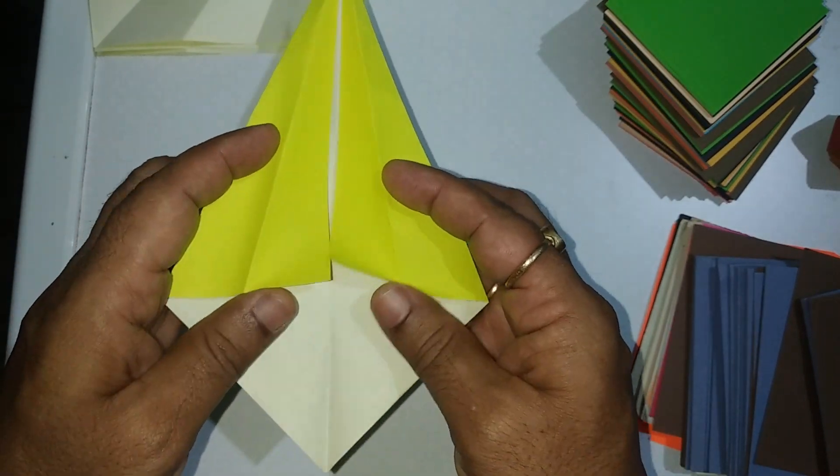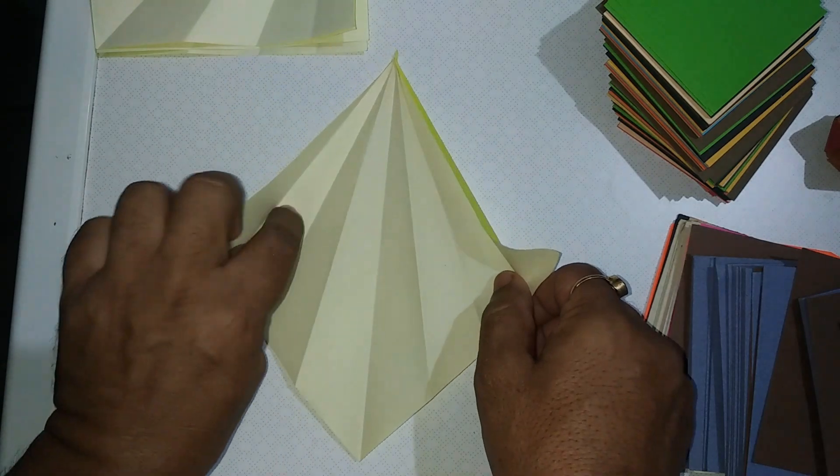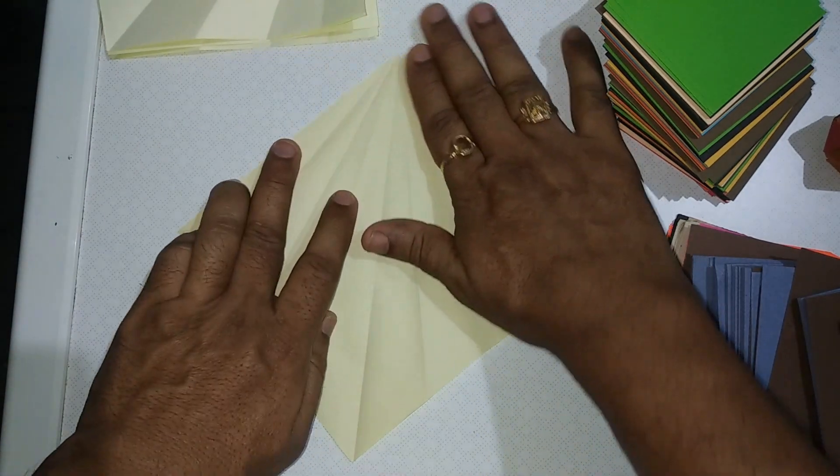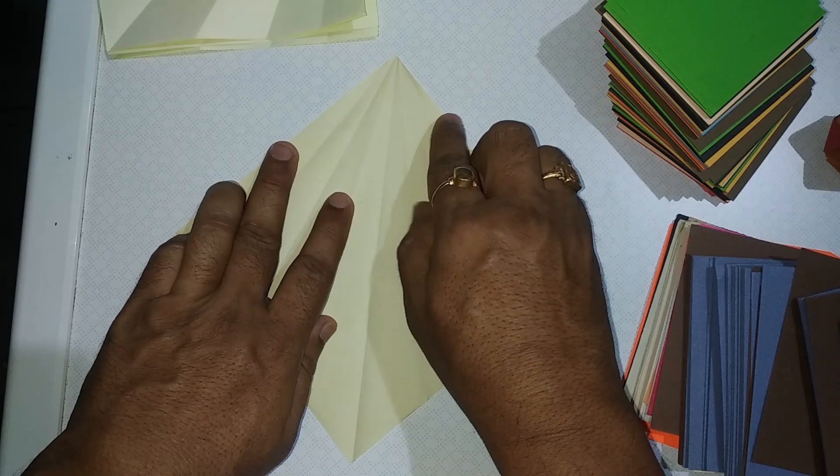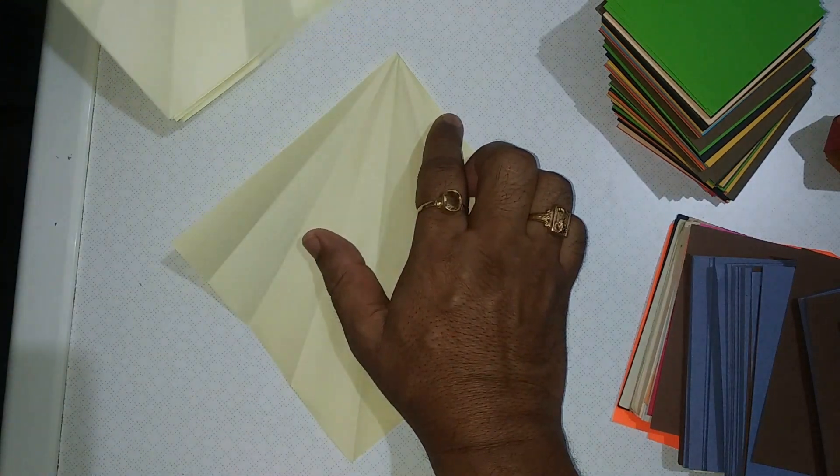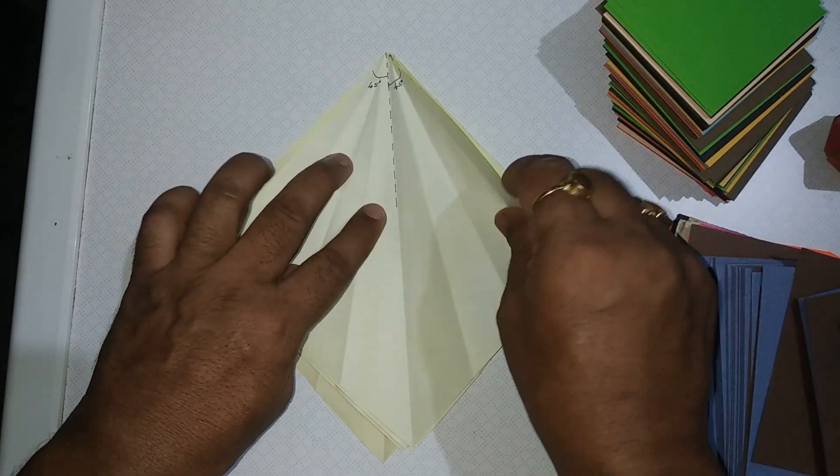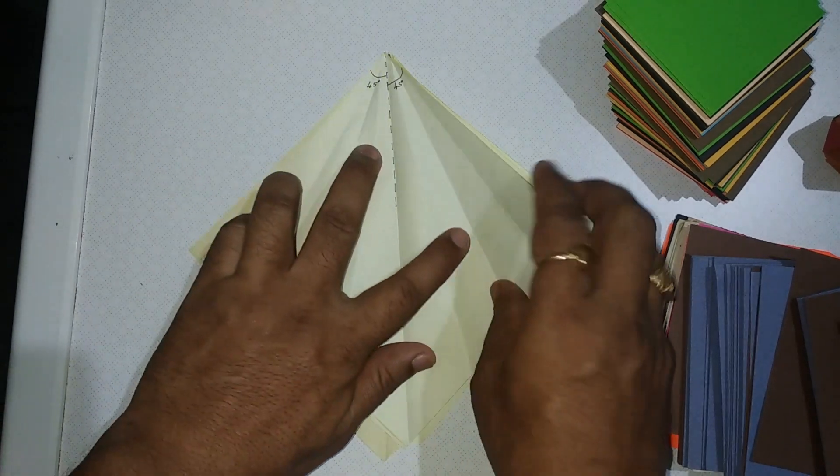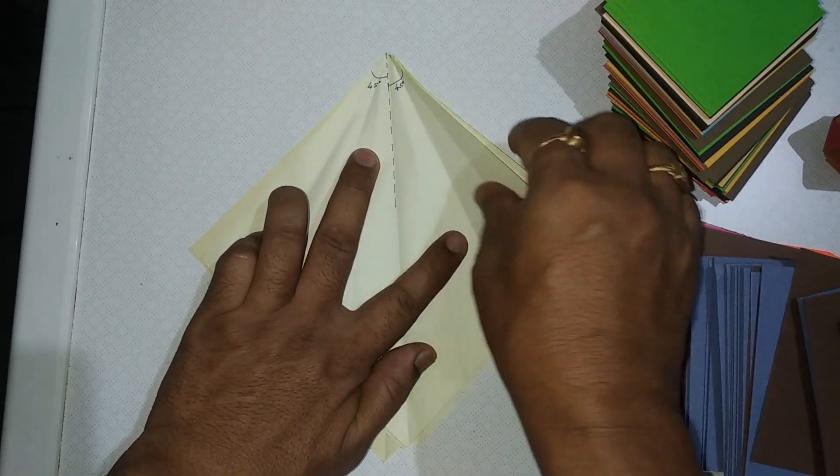Unfold and observe. At the corner where we have folded, we have several angles. Let's explore. First when we fold it into half, we got two 45 degree angles.